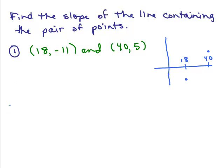So let's set it up, m equals, you have your fraction bar and your minus signs, and let's do the first ordered pair before the minus sign and the second ordered pair, y over x, after the minus sign. So let's see, y over x, negative 11 over 18 and 5 over 40.